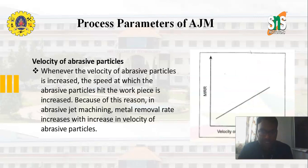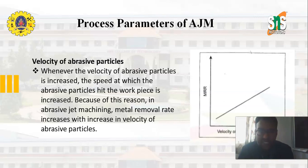The next important parameter is the velocity of abrasive particles. Whenever the velocity of abrasive particles is increased, the speed at which the abrasive particles hit the workpiece is increased. Because of this reason, in abrasive jet machining, metal removal rate increases with increasing velocity of the abrasive particles. Similar to pressure, as the velocity of the abrasive particles increases, the metal removal rate also increases.